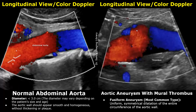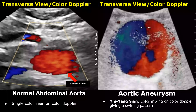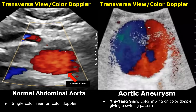This is how a normal aorta appears on color Doppler in transverse view — only a single color, usually red, is seen inside the aorta. You can see the mixing of colors much better in the transverse view. A swirling pattern is seen on color Doppler in the transverse plane. This color mixing pattern is named the yin-yang sign.